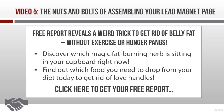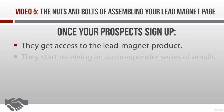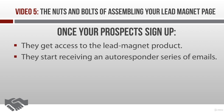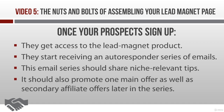You're going to get a higher conversion rate when you specifically tell people what to do, rather than assuming they'll know. When people join your list, they'll get access to the lead magnet product, but they should also get started on an autoresponder series of at least five emails. Your email series should share some good niche-relevant tips and also promote one main affiliate offer, as well as secondary affiliate offers later in the series.